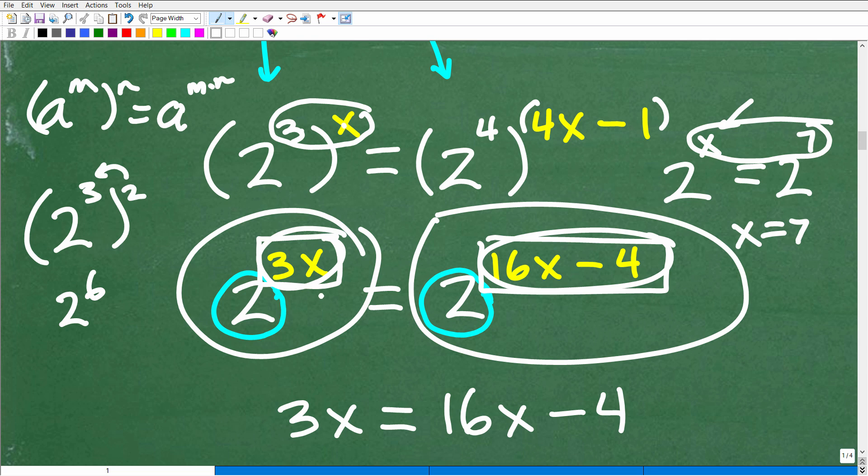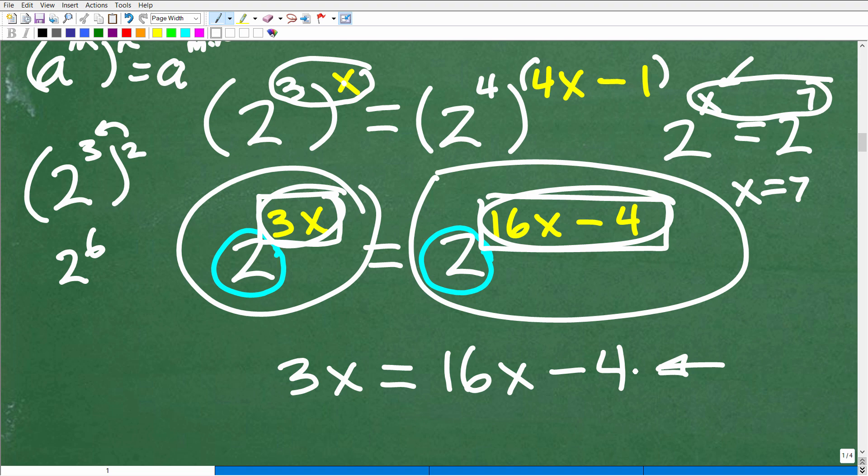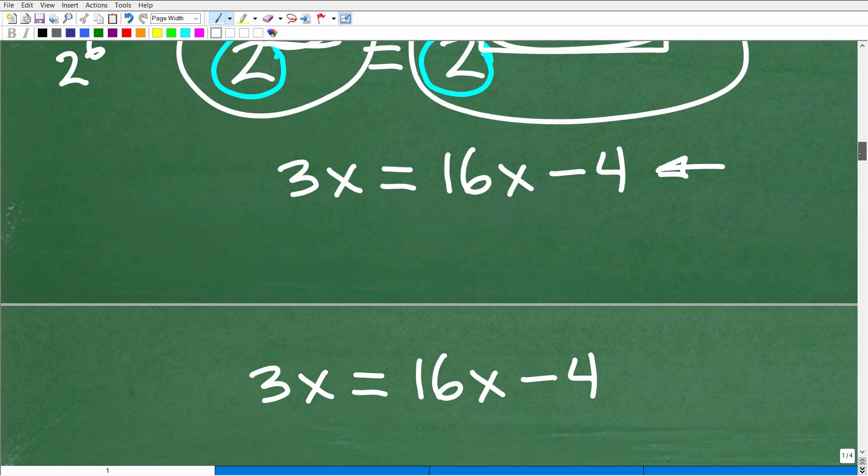So here we can simply equate the exponents, and that's exactly what we're going to do here. So we're going to say, oh, well, in order for this to be true, 3x must be equal to 16x minus 4. So that's why we're going to set up this equation right here. And then we'll solve this basic equation for x, and we'll be done.